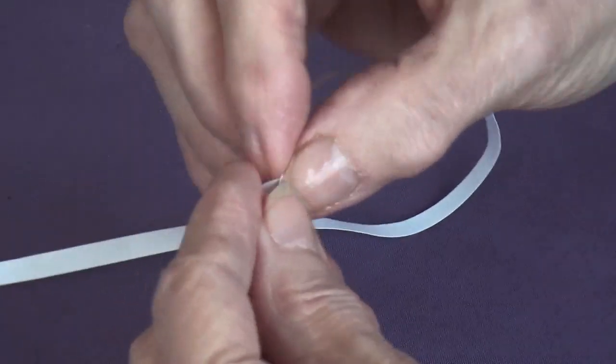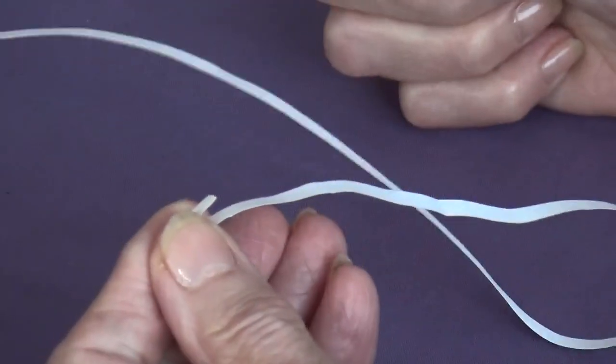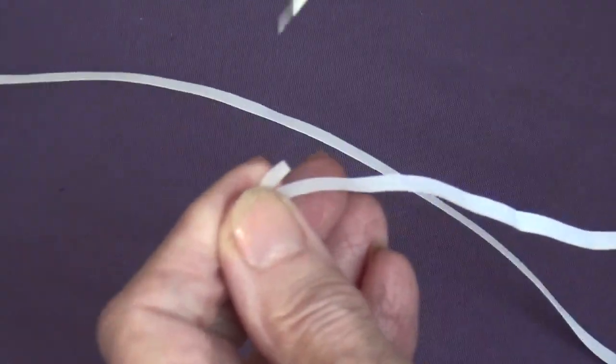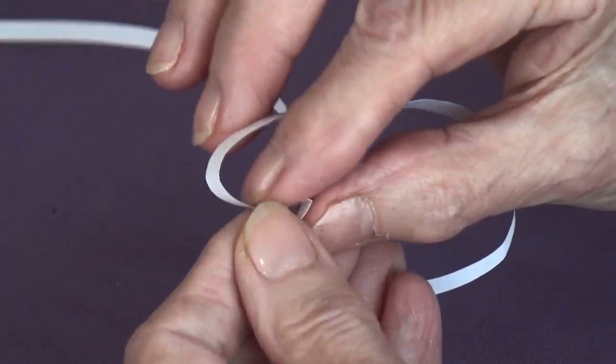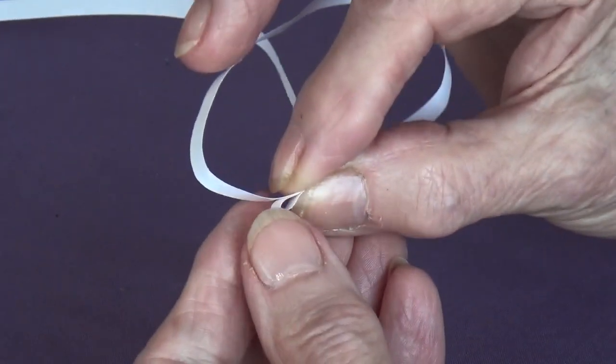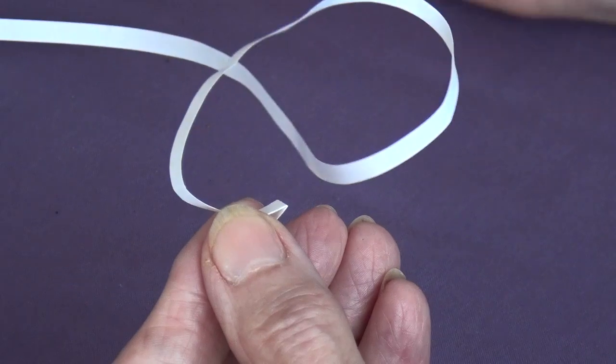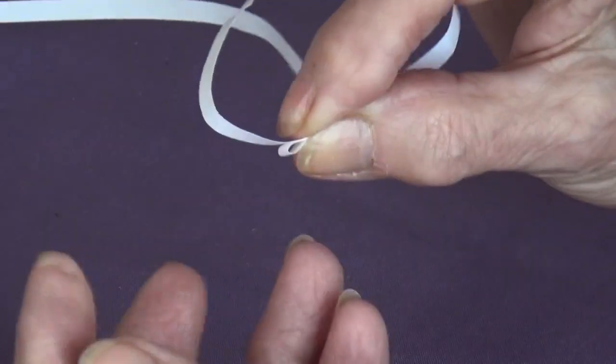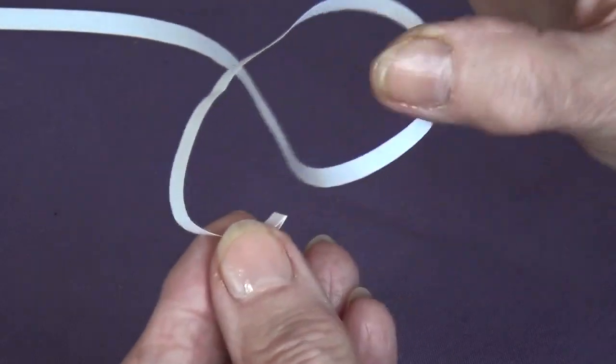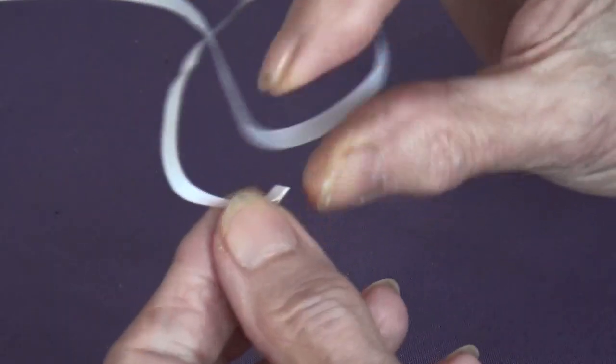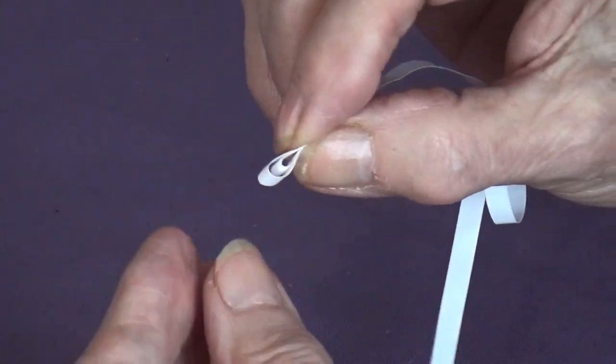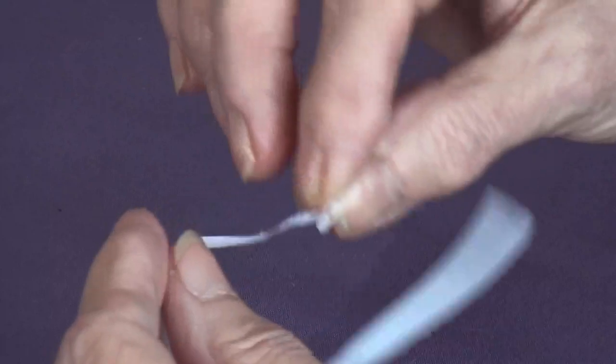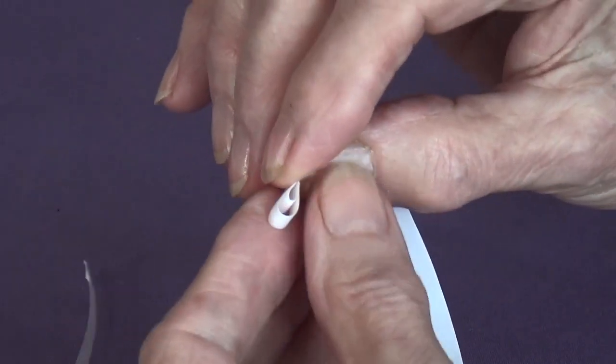I'm going to make the first loop and we'll just make it a nice, usable sort of size. Then I'm going to put a little bit of, a tiny touch of glue on its tip and come round. Now, I'm holding the loop that way with my left hand and this way with my right hand.